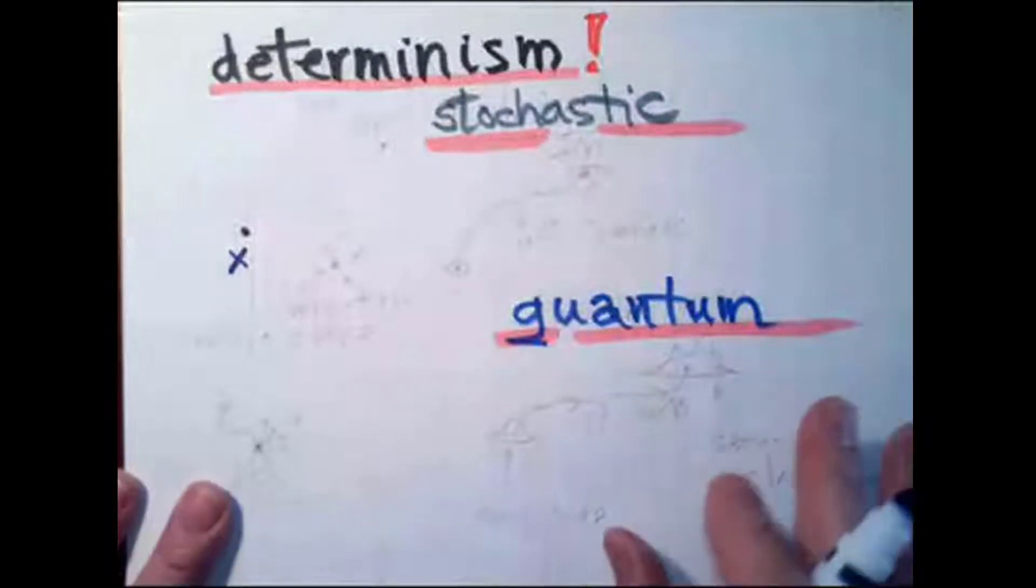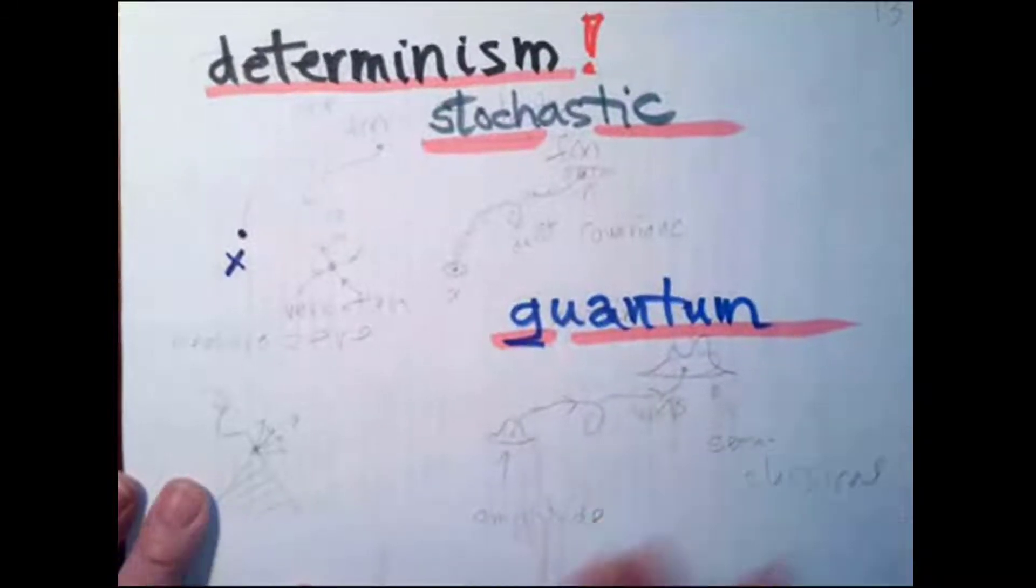That's why we have statistical mechanics. Things like arrow of time, it happens because of that.